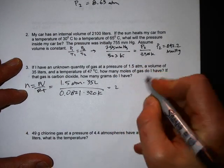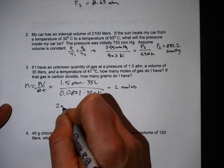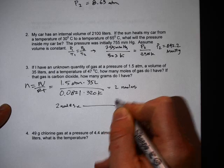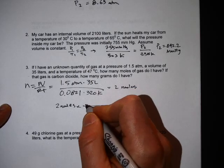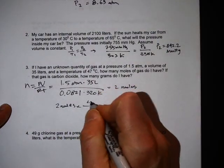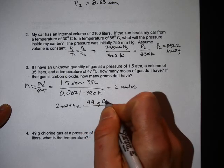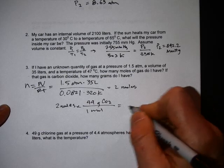So that equals 2 moles. And if the gas is carbon dioxide, how many grams? So all you just take your 2 moles times the molar mass of carbon dioxide, which is carbon is 12 plus 16 times 2 is 44, and that equals 88 grams.